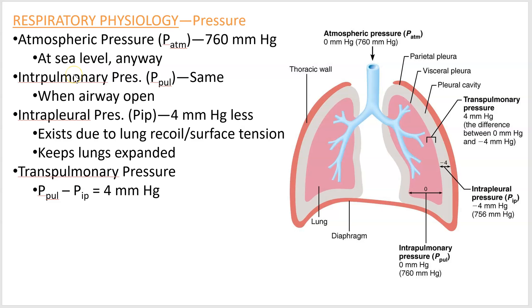Atmospheric pressure and intrapulmonary pressure are the same if you have an open airway. If you open your airway and don't close it off with your throat, the air inside your lungs is continuous with the atmosphere and therefore has the same pressure. The intrapleural space — between the ribs and the lungs with fluid inside — has a pressure on average about four millimeters of mercury less than the intrapulmonary pressure.